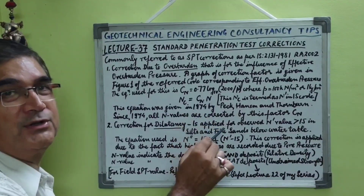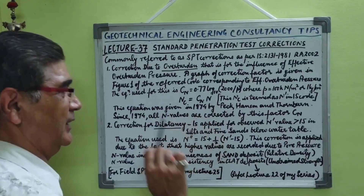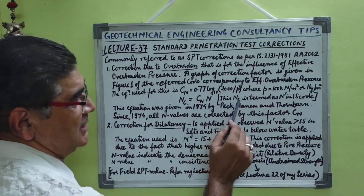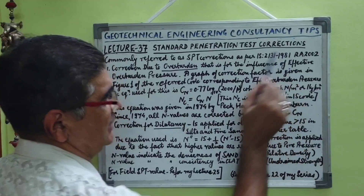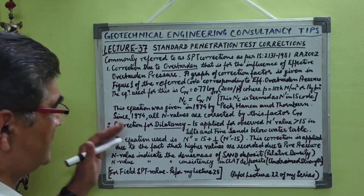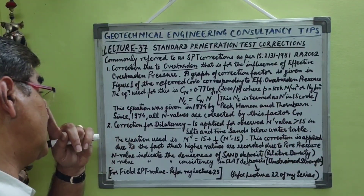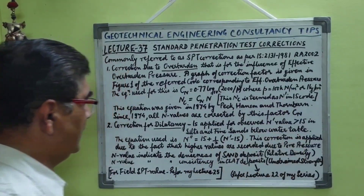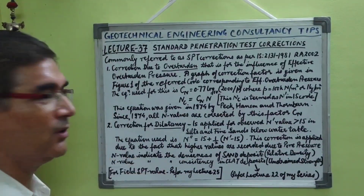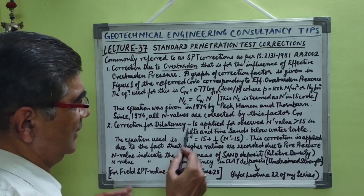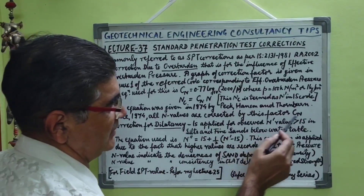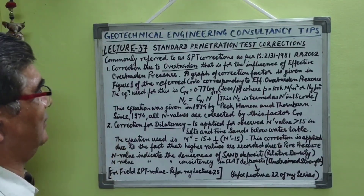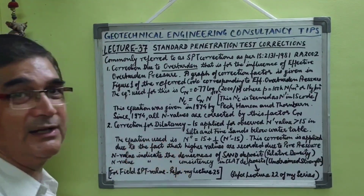The observed standard penetration test value at the field for different depths is corrected this way; the result is termed as N' in the IS code. This equation was given in 1974 by Peck, Hansen, and Thornburn, and since 1974 all observed N values at the field have been corrected by this factor CN.